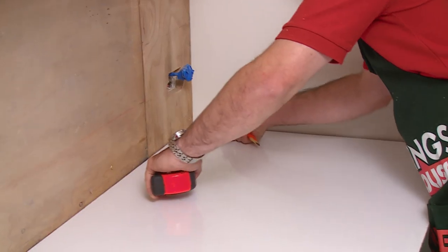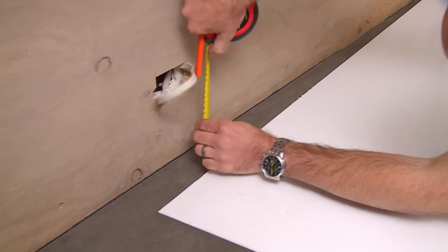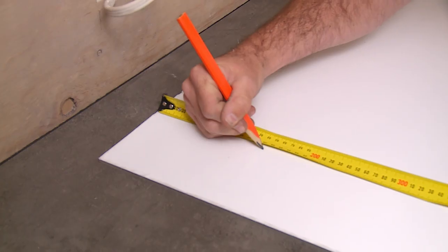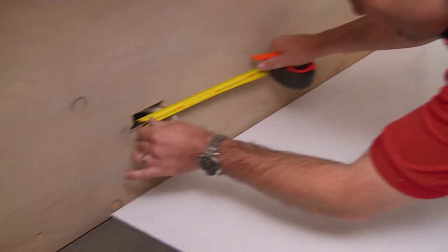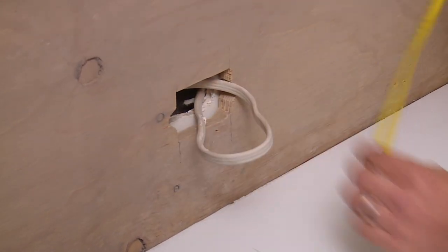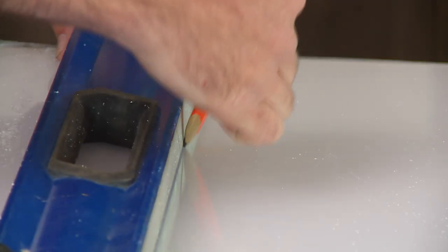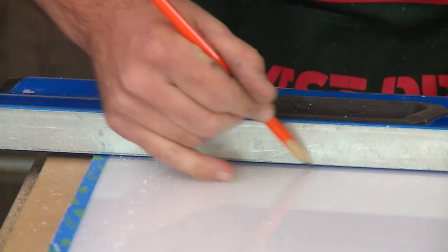It's now time to mark out the power points. I've now taken the center point for the power points. I'm now going to measure the width and the height that the power point needs to be fitted into. Now I'm going to transfer the measurements onto the front of the splashback. I prefer to do it on the front so that there's less chance of splintering and you've got more control over where you're doing the cut.